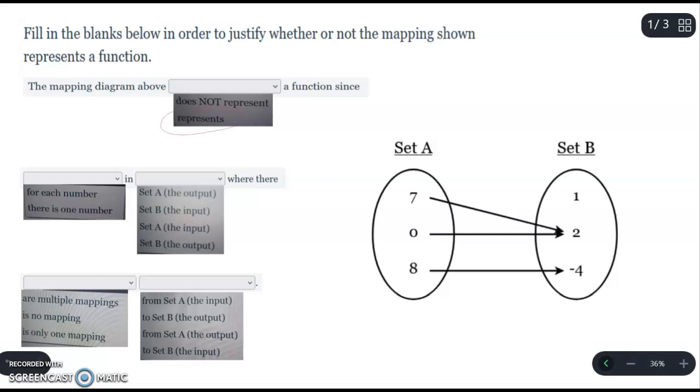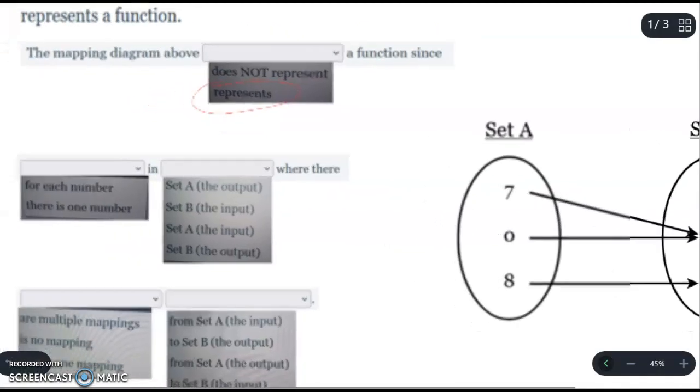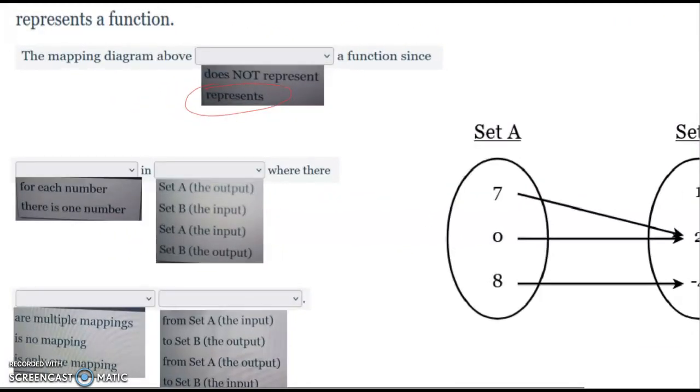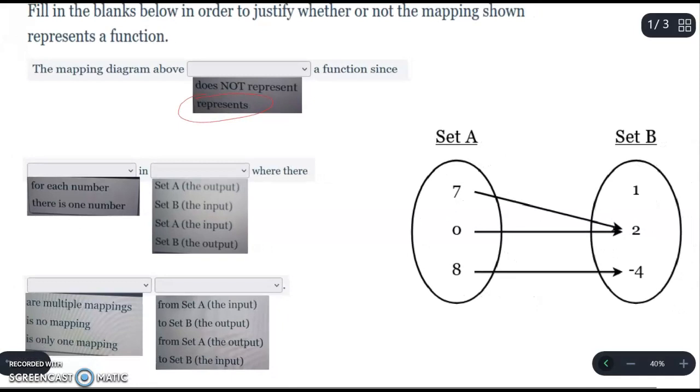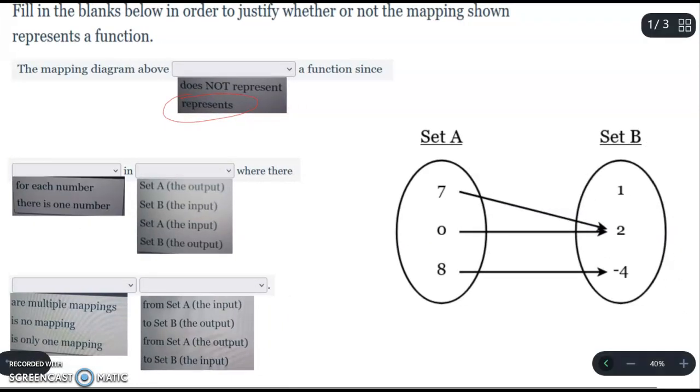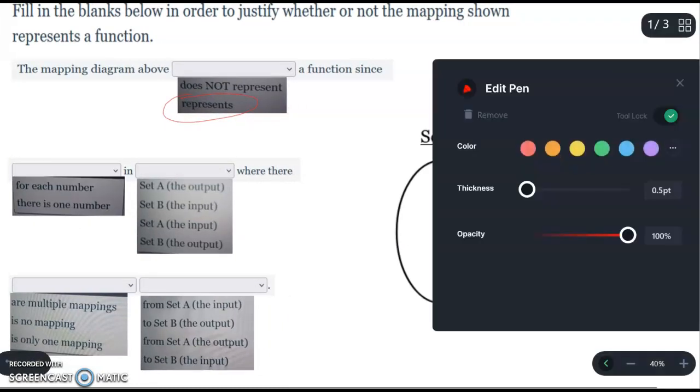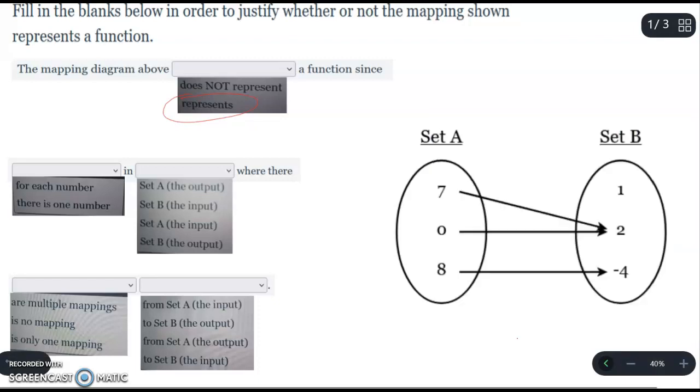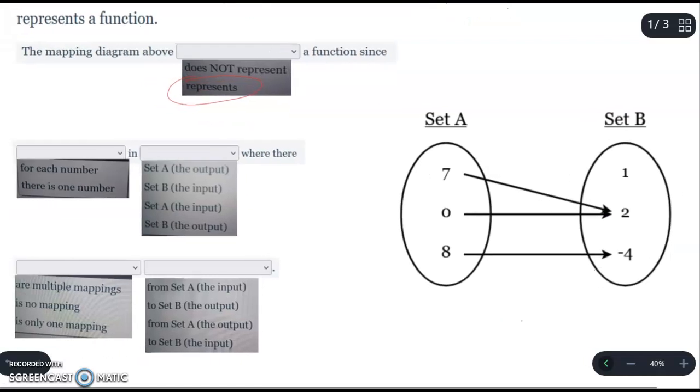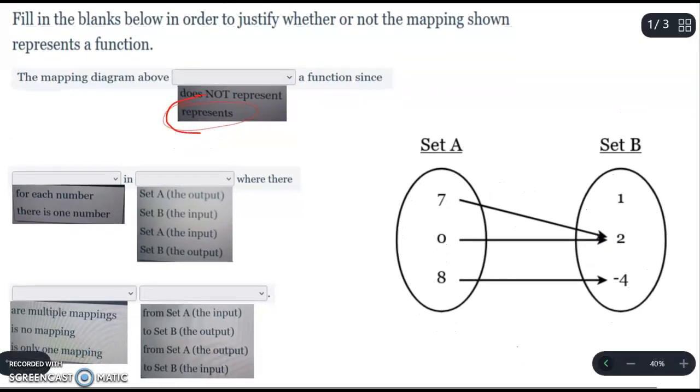Once you do that, everything else is pretty simple from there. So you would pick function here. This represents a function. The mapping diagram above represents a function since for each number...